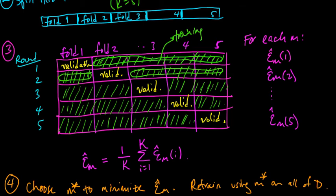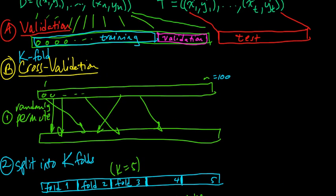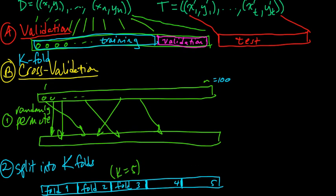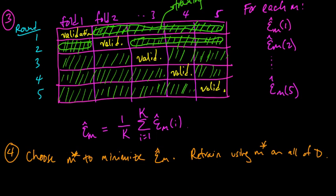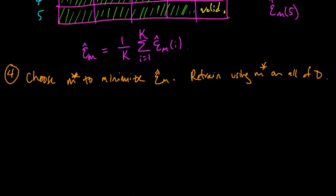So one question here, one thing we haven't really talked about, is how do you choose k? What is the good value of k? Well, I'll come back to it a little bit later. We'll talk about what is a good value of k. Often, let me just say at this point, oftentimes people use either 5 or 10 for k.